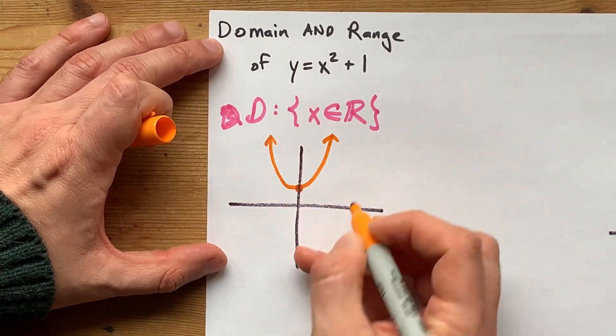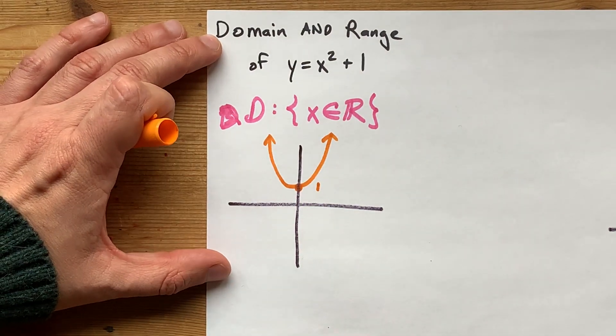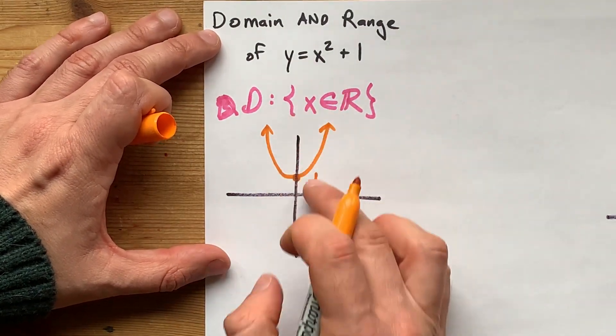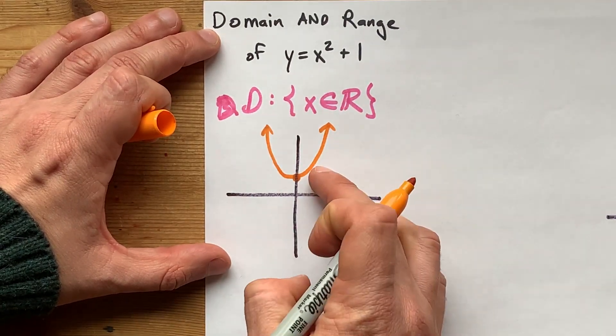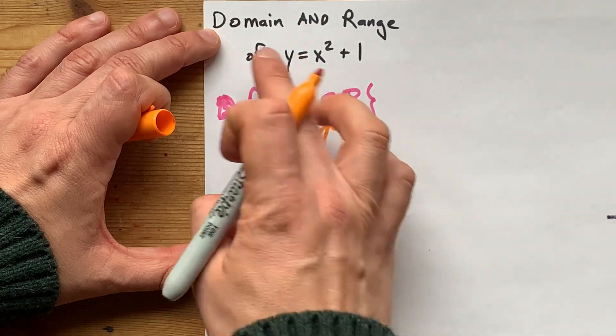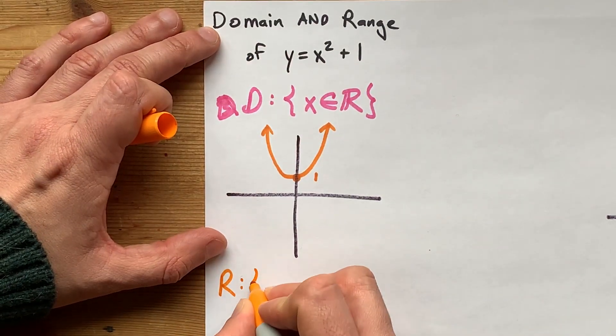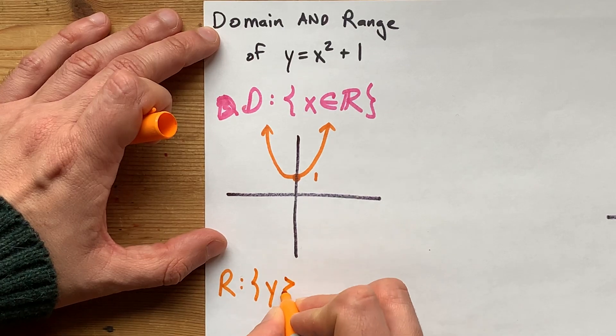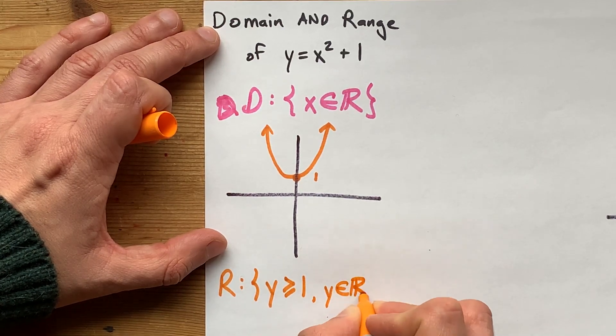So, that means this parabola only ever goes as low as 1 on the y-axis. Any number above or equal to 1 is fair game. Any number less than positive 1 is never going to come out as an answer to this. That means that the range is y must be greater than or equal to 1, as well as being a real number.